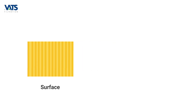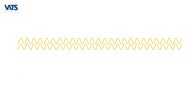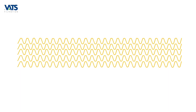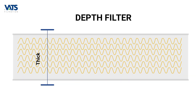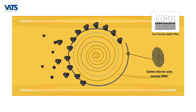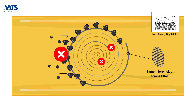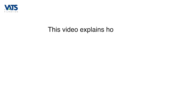In a previous video we understood the difference between a surface and a depth filter, and also why a true density depth filter does not really result in a higher dirt holding capacity. This video explains how a solution to this problem is offered by Watts in its G2D filter.